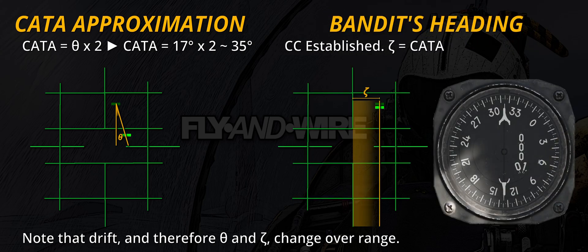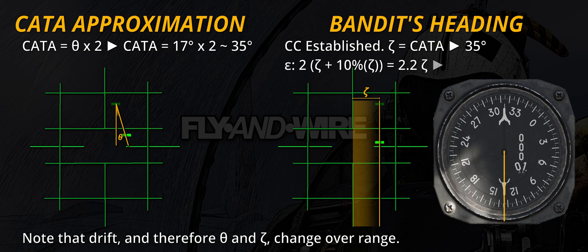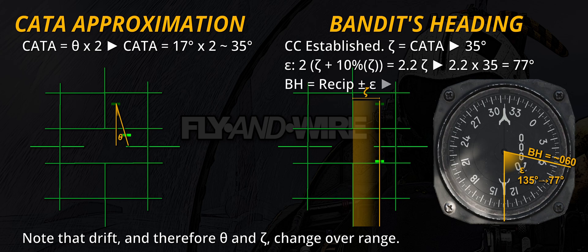Bandits heading from collision antenna train angle. When CATA is established, the target's heading can be determined using the ATA and the B-DHI. The ATA read on the B-scope, indicated by zeta, is increased by 10% and doubled. The resulting angle epsilon is computed on the B-DHI, starting from the fighter's reciprocal and towards the cold side.